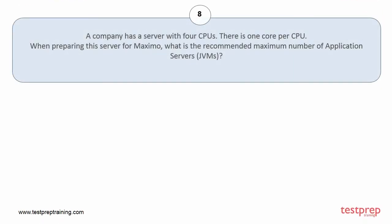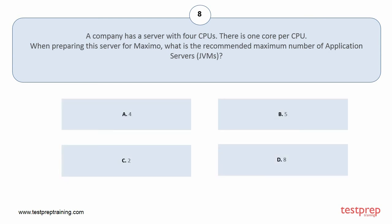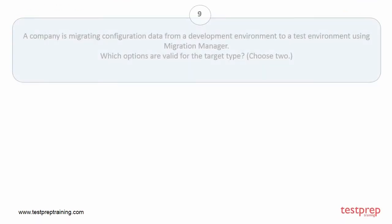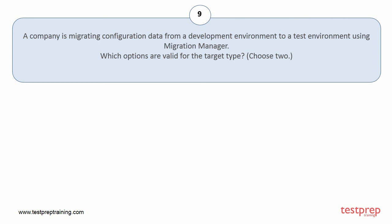Question number 8. A company has a server with 4 CPUs. There is one core per CPU. When preparing this server for Maximo, what is the recommended maximum number of application servers? The correct answer is option C.